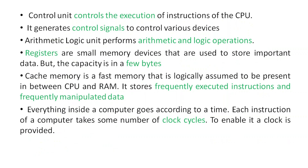The control unit controls the execution of instructions of the CPU. Every CPU has its own instruction set. Each instruction requires some clock cycles. Control signals are also necessary to control various devices like keyboard and mouse — for example, read and write signals. So the control unit generates and controls these signals and indirectly controls various devices.